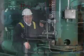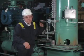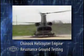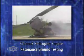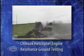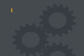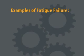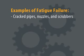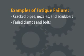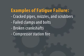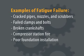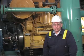These small diameter lines can easily vibrate, crack, and even cause gas releases. Excessive vibration leads to high stress levels on machines and other related components, which leads to fatigue failure. Here are some prime examples of fatigue failure: cracked pipes, nozzles or scrubbers, failed clamps and bolts, broken crankshafts, compressor station fire, and poor foundation installation.